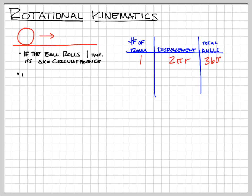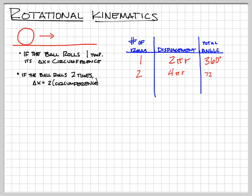If the ball rolls two times, the delta x is two times the circumference. So, two rolls gives us twice the circumference: 4πr, and that's 720 degrees.